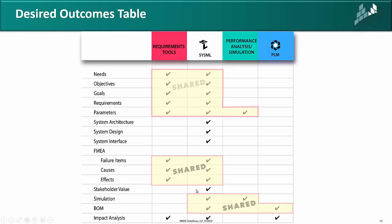You can add a domain-specific language like FMEA on top of this to capture failure modes, causes, and effects. I can add another language on top for stakeholder value networks so I can identify stakeholders, do calculations, and determine those values. You want to do simulations and analysis — performance analysis — to know what's happening and whether what you've got is sufficient for what you're trying to build. I need to generate a bill of materials, either pulling it from the CAD world or capturing it in my abstract SysML model. And I want to do impact analysis across the tools, so any given change can be captured and reported from any tool's point of view.